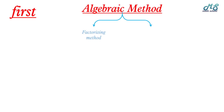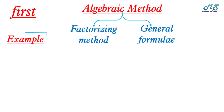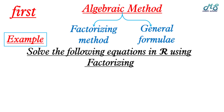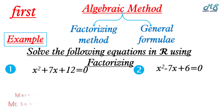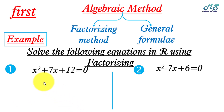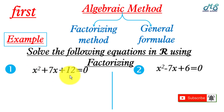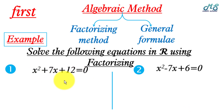We will study how to solve equations using factorizing and the general formula. Example one: solve x squared plus 7x plus 12 equals zero. Factorize the left-hand side — it's a trinomial. We look for two numbers whose product is 12 and whose sum is 7. That's 3 and 4, since 3 times 4 equals 12 and 3 plus 4 equals 7. So we factorize as x plus 3 times x plus 4 equals zero.